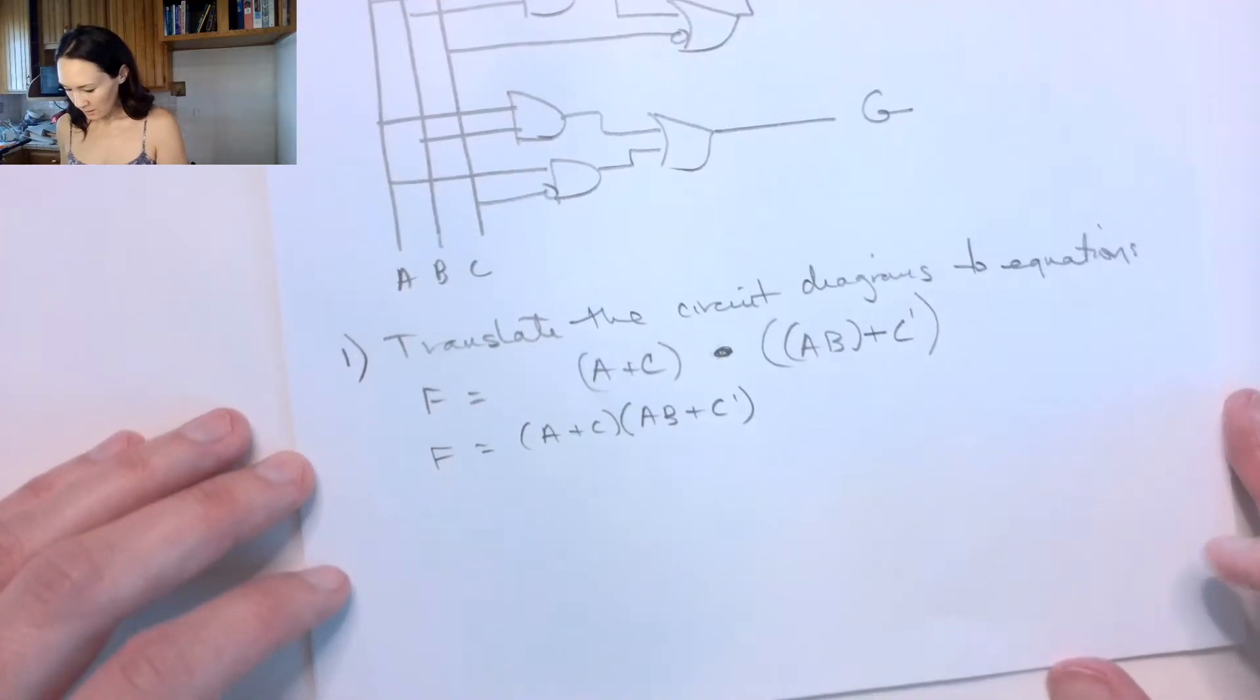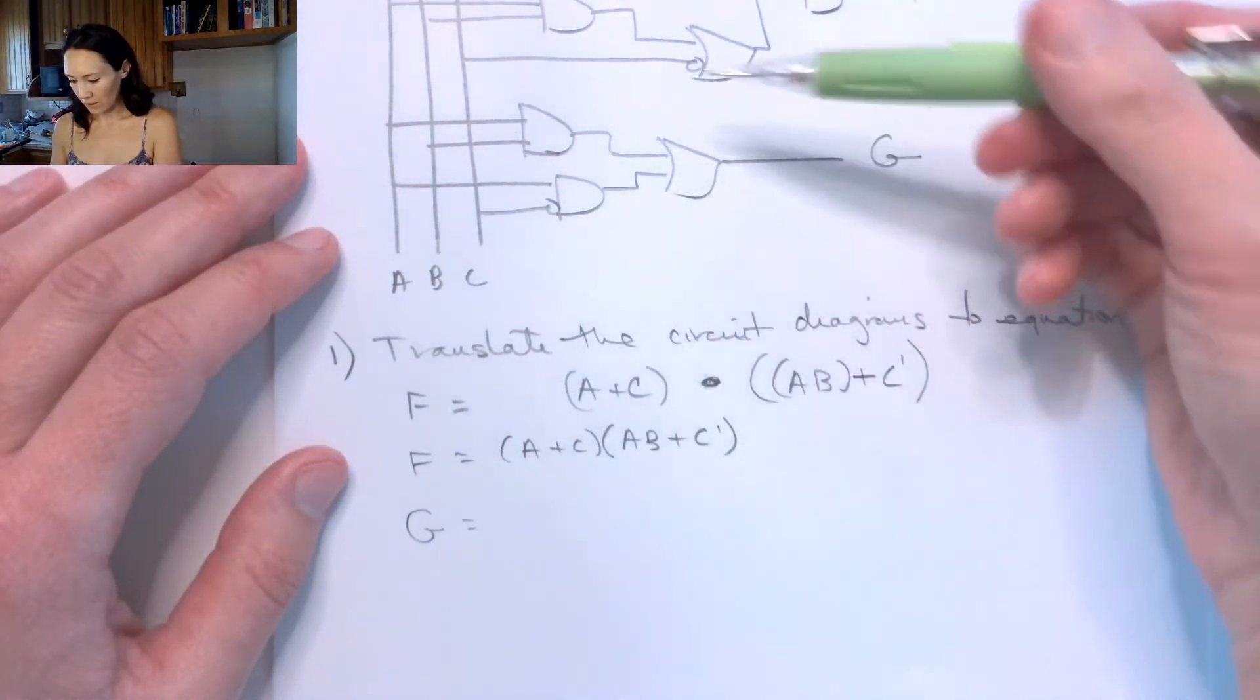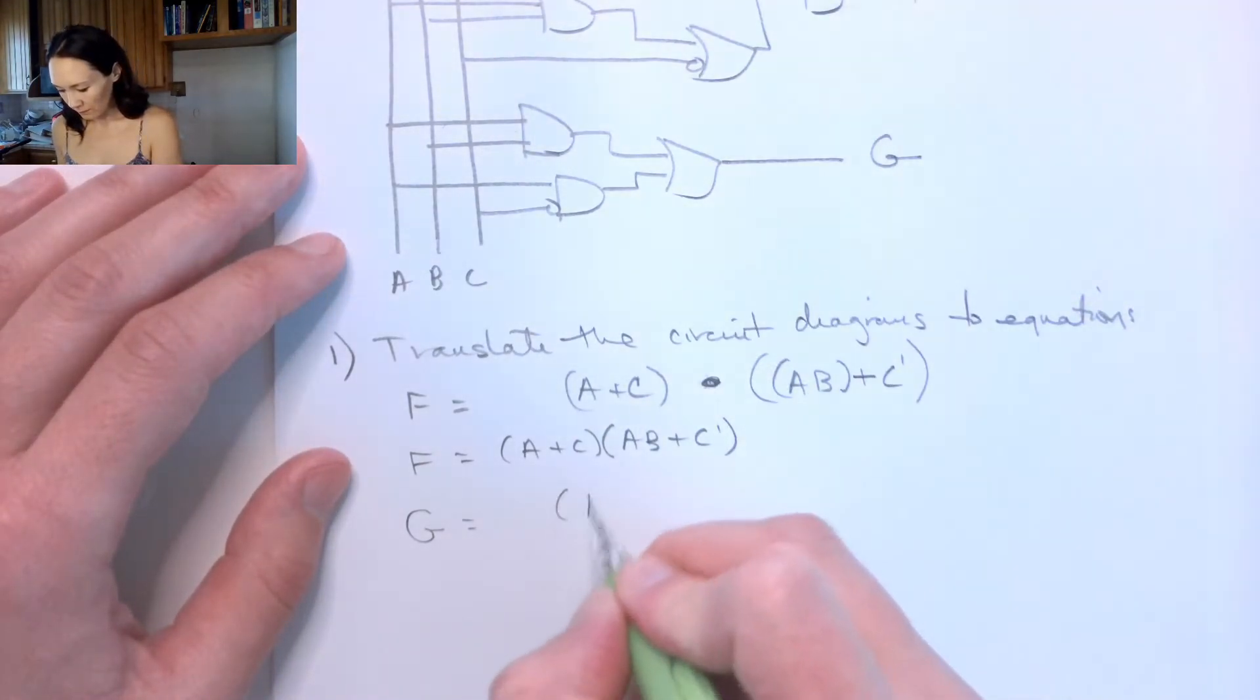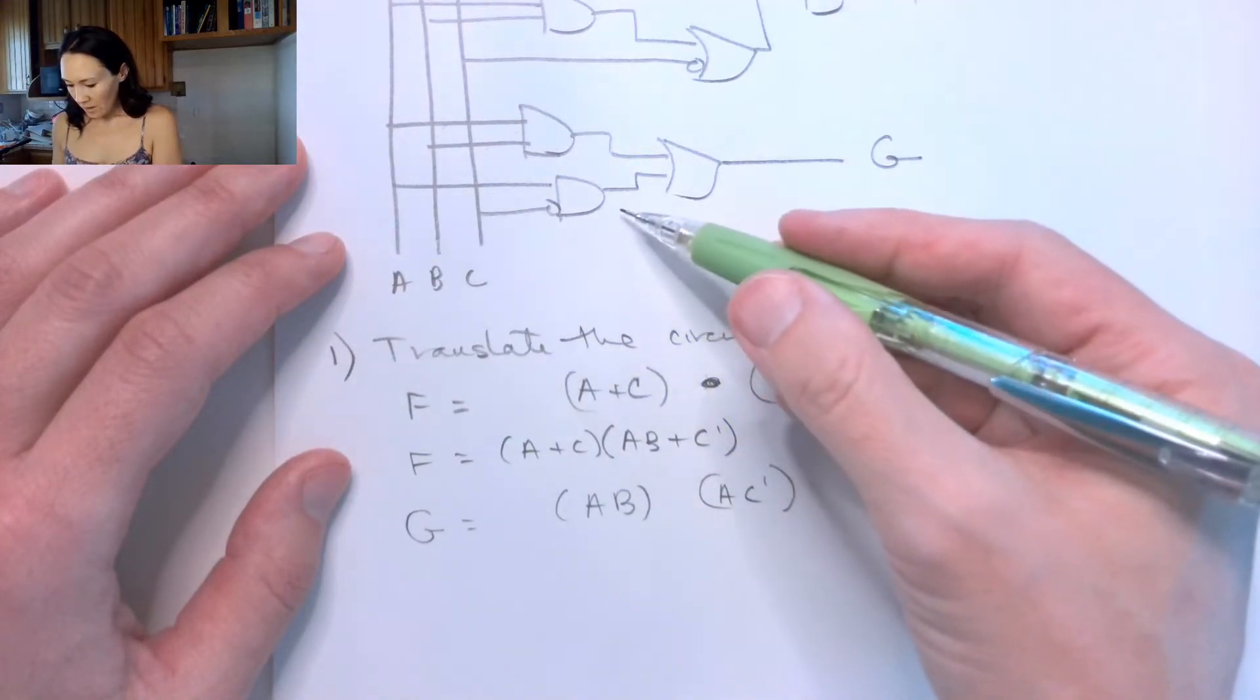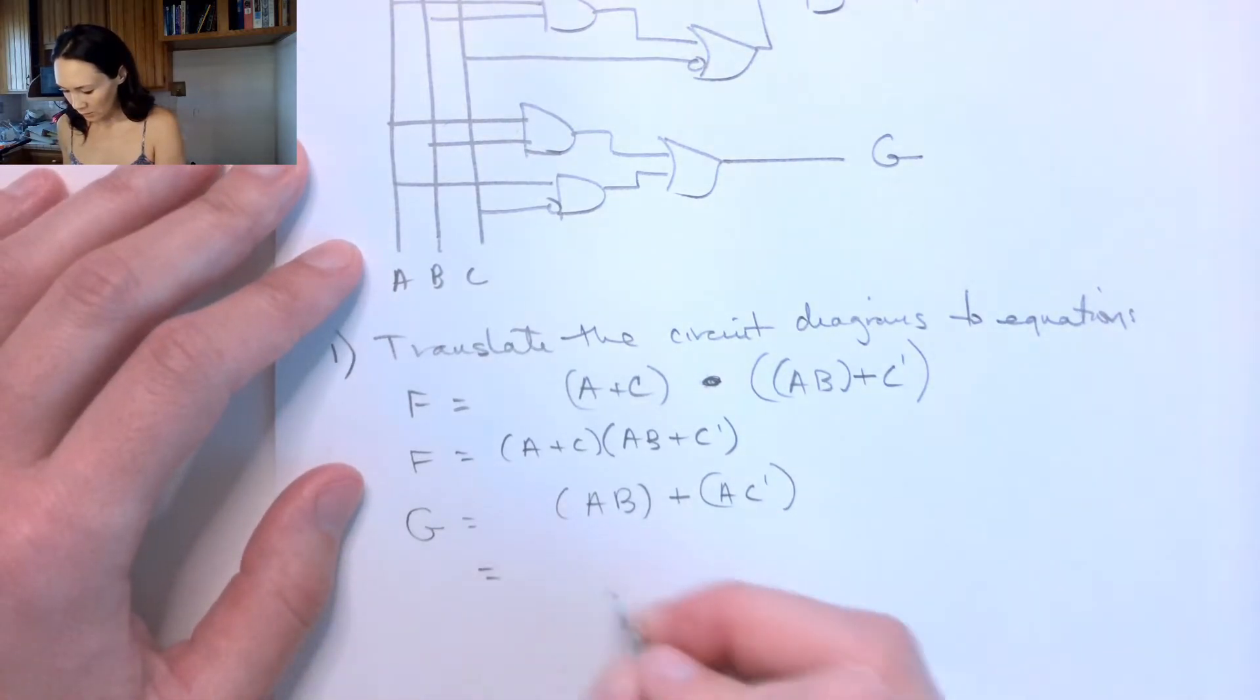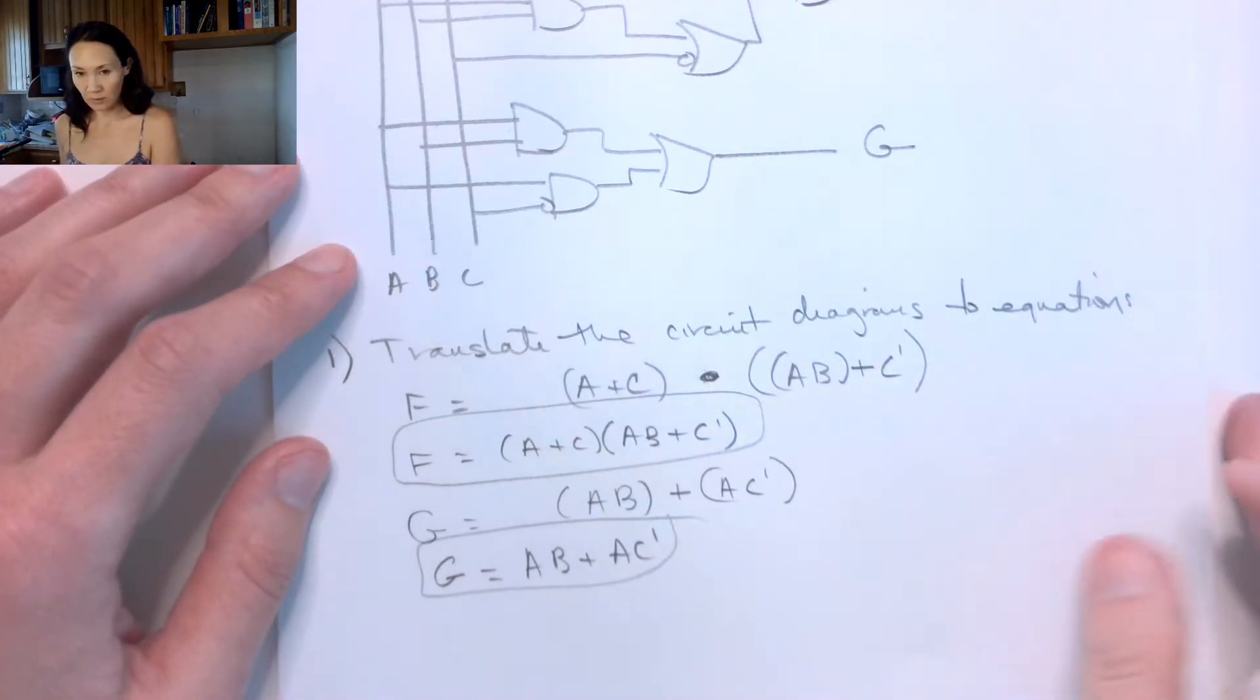Okay, great. And then for our G function, we look at what's happening over here in this second half of the array. So we have A and B AND'd, and we also have A and C not AND'd together. And then these two results are then OR'd. So I can write G = AB + AC'. So I have my two functions, F and G. That was my first step.